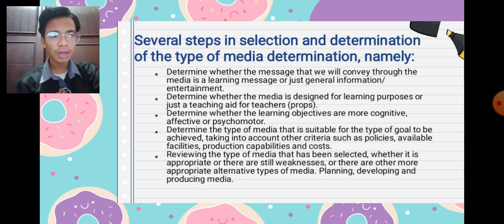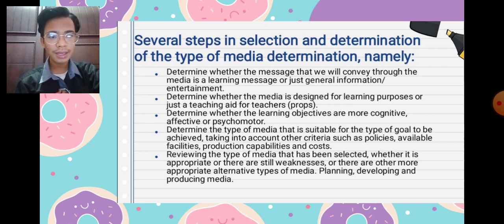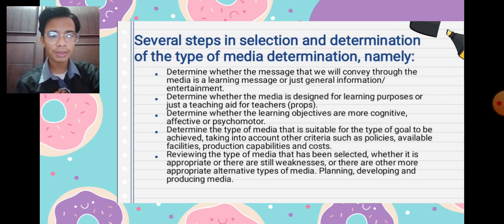When selecting media, take into account other criteria such as policies, available facilities, production capabilities, and cost. Then review the type of media that has been selected to determine whether it is appropriate or if there are still weaknesses, or whether there are other more appropriate alternative types of media. Finally, proceed with the planning, developing, and producing of media.